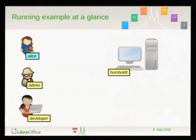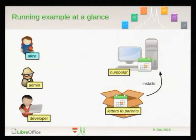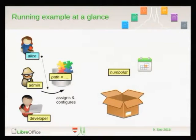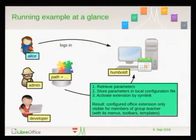Just to conclude with the running example at a glance: the developer uploads a package with the extension; this is installed by software deployment; the admin has done his configuration job — providing the application, assigning it to the user, and configuring the configuration settings. When the user logs in, the parameters are retrieved from the configuration database, stored so the extension will access them later, and the extension itself is activated by a symbolic link. And the result is what we want.